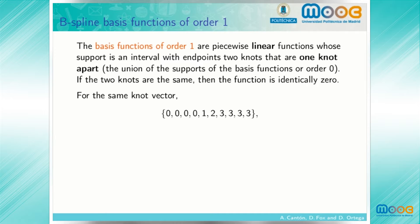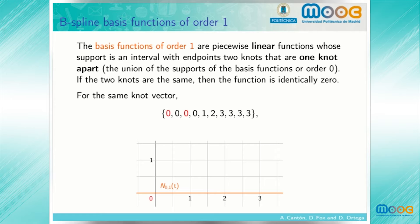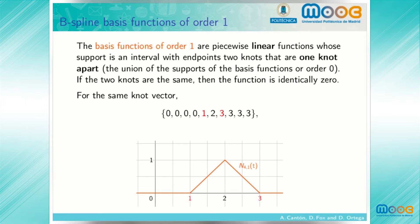If the two knots are the same, then the function is identically 0. For the knot vector considered before, the first two basis functions of order 1 are identically 0 because they correspond to repeated knots. The third basis function is no longer 0, corresponding to the knots 0 and 1. As we advance through the vector, the basis functions change their shape, until again we begin repeating knots and the basis functions are identically 0.